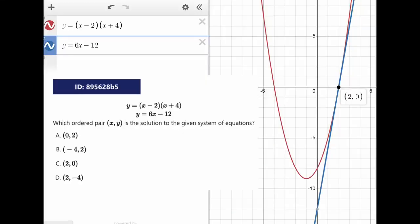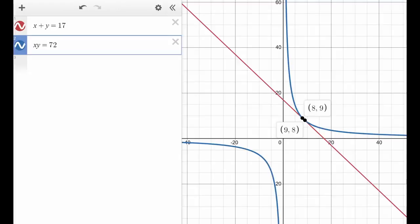This works for quadratics, too. As long as there are two equations and two variables, you can find their point of intersection. Sometimes there might be multiple points of intersection, like in this goofy system.